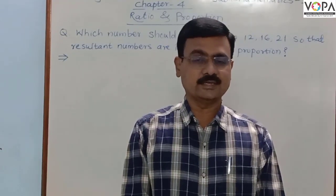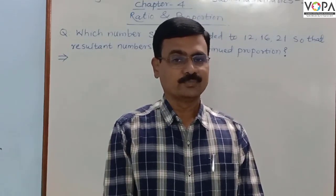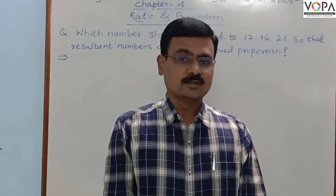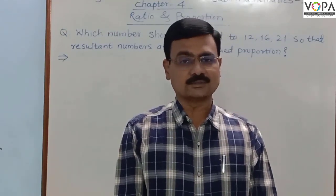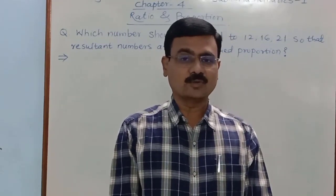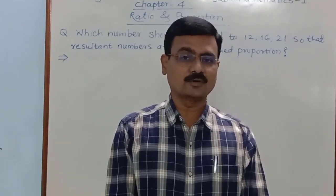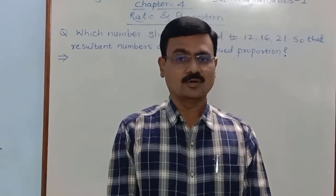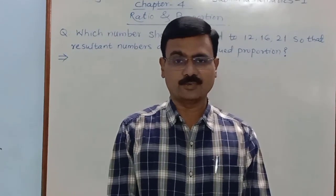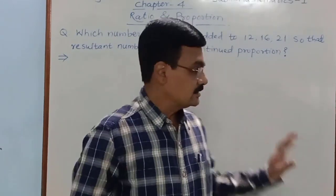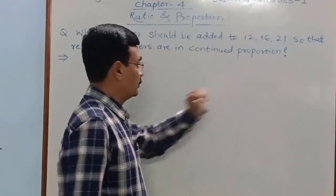Students, here is an example of a continual proportion. We studied the continual proportion — if there are three numbers and the square of the middle term is equal to the product of the first and the last term, then those three numbers are said to be in continual proportion. Here is an example based on that same topic.